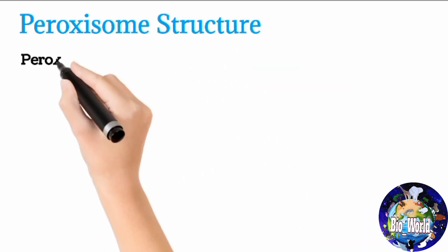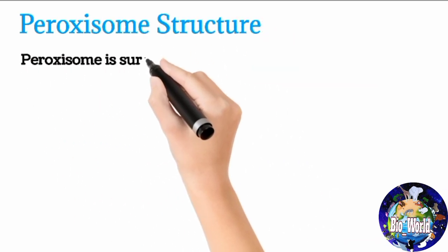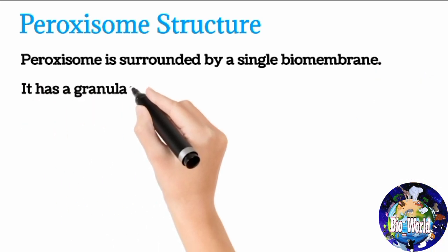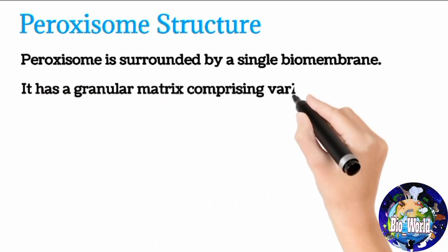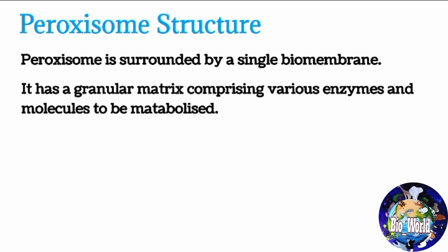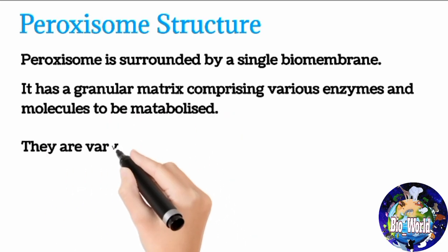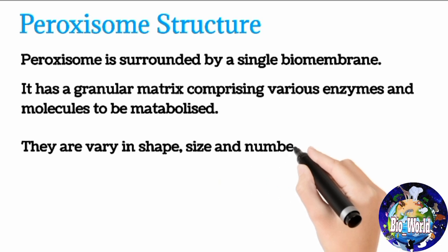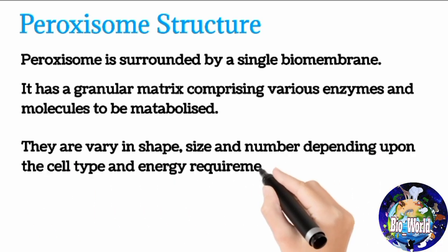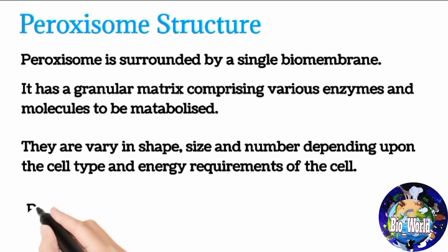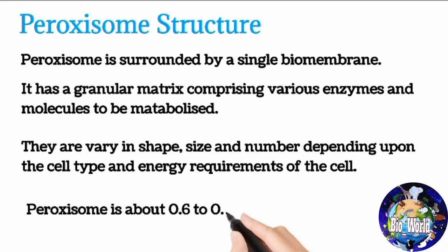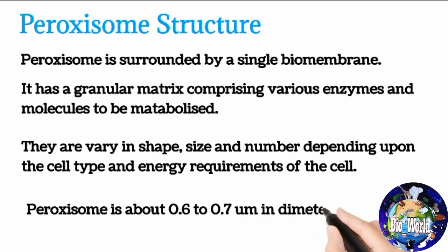Peroxisome structure: The peroxisome is surrounded by a single biomembrane. It has a granular matrix comprising various enzymes and molecules to be metabolized. They vary in shape, size, and number depending upon the cell type and energy requirements of the cell. Peroxisomes are about 0.6 to 0.7 micrometers in diameter.